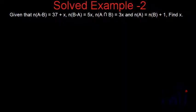In this video we are taking a solved example — a problem we'll try to solve. The problem statement says: given that n of A minus B is equal to 37 plus x, n of B minus A is 5x, and n of A intersection B is equal to 3x. Also, n of A is equal to n of B plus 1. We have to find x, where the cardinal numbers are given in terms of x and we have a relation between the cardinal number of A and cardinal number of B.